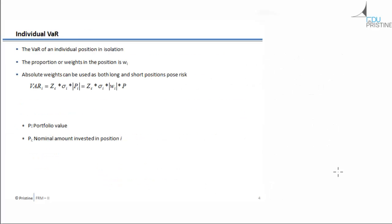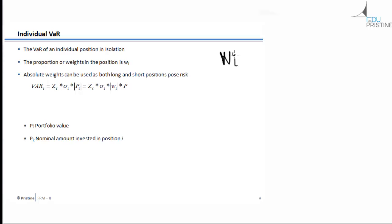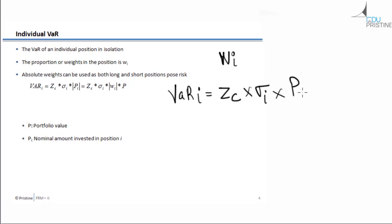Let us discuss Individual VaR in more detail. Individual VaR is the VaR of an individual position in isolation — the concept of diversification is not applied here. If the weight of the individual position is W_i, the VaR of that position is calculated as: ZC into standard deviation of that individual position into the value of that position. Here P is the portfolio value and P_i is the nominal amount invested in position i.